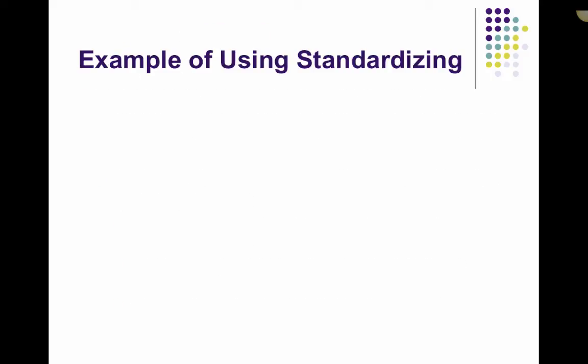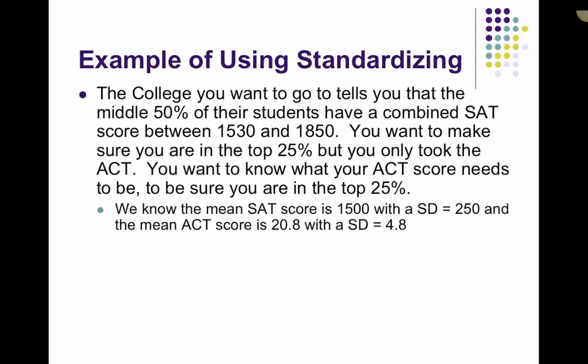So let's look at an example of using standardizing. So the college you want to go to tells you that the middle 50% of the students have a combined SAT score between 1530 and 1850. Now, if this is our IQR, that means that 1530 is our Q1 and 1850 is our Q3. So you want to make sure that you're in the top 25%. So to be in the top 25%, that's 75% and above. So you would have to have a score of at least 1850 here.